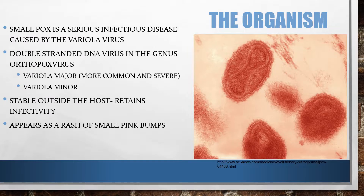First, let's talk about the organism. Smallpox is a serious infectious disease caused by the variola virus. It is a double-stranded DNA virus in the genus orthopoxvirus. Smallpox can be caused by variola major or minor. The more common type is variola major, which is very severe, causing a harsh rash and high temperature.